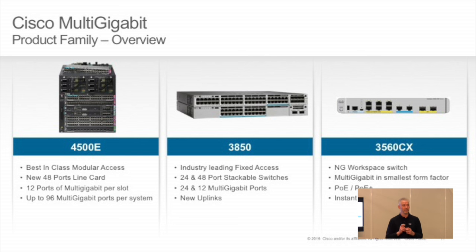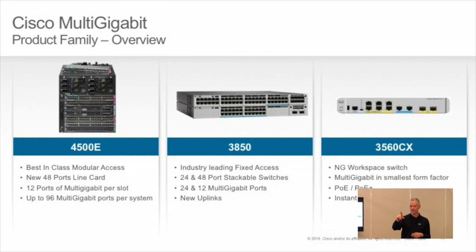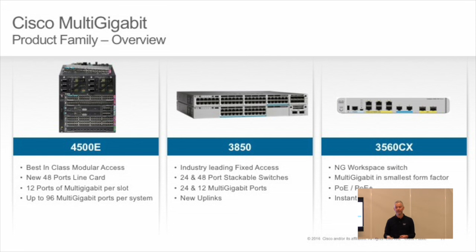Products: these three were all announced at Cisco Live in Milan last year and all started shipping mid-2015. We have line cards for the 4500E, switches for the 3850s, and a compact switch. Enterprise people use a mix — some 2K, 3K, 4K. The 4K is cheaper for some things, 3K for others. The compact switches are a whole lot of fun and solve some specific use cases.